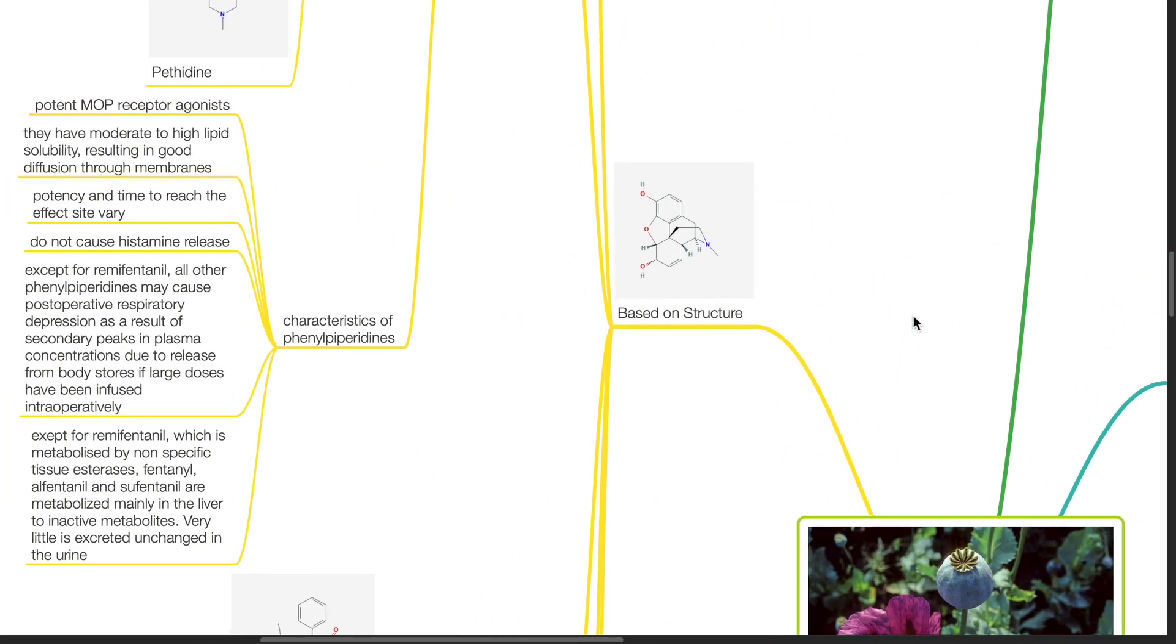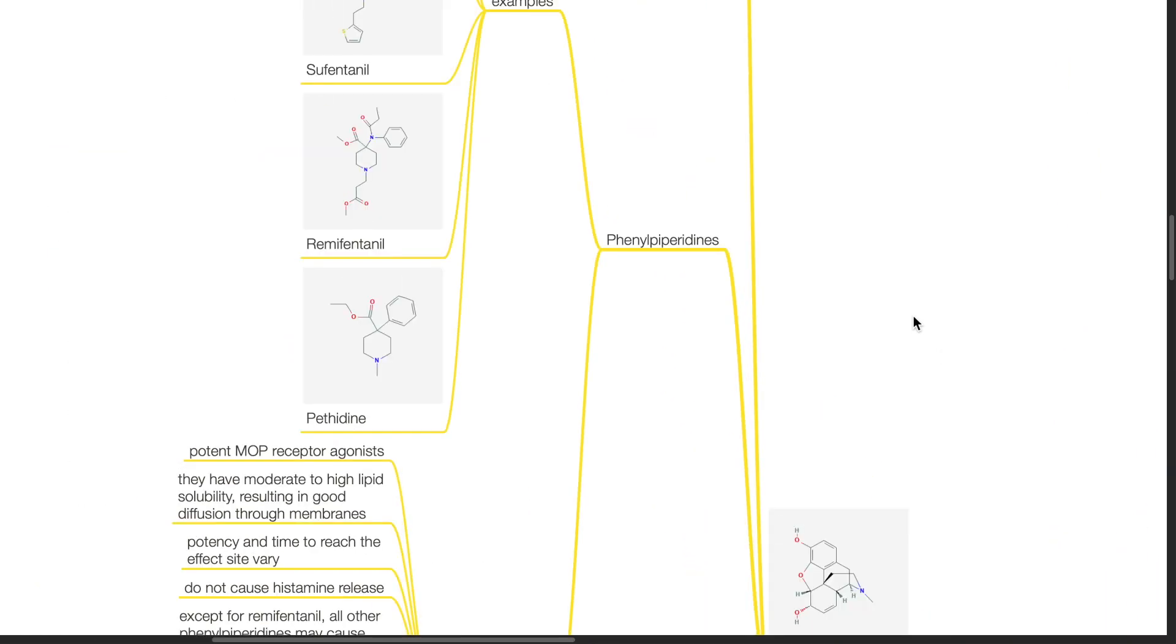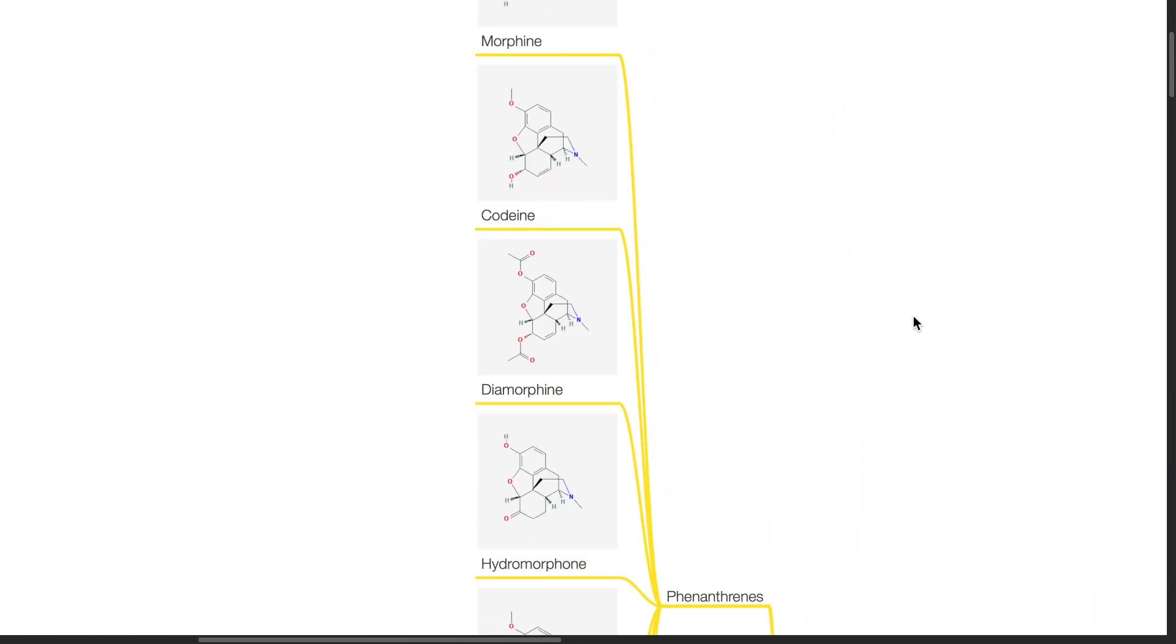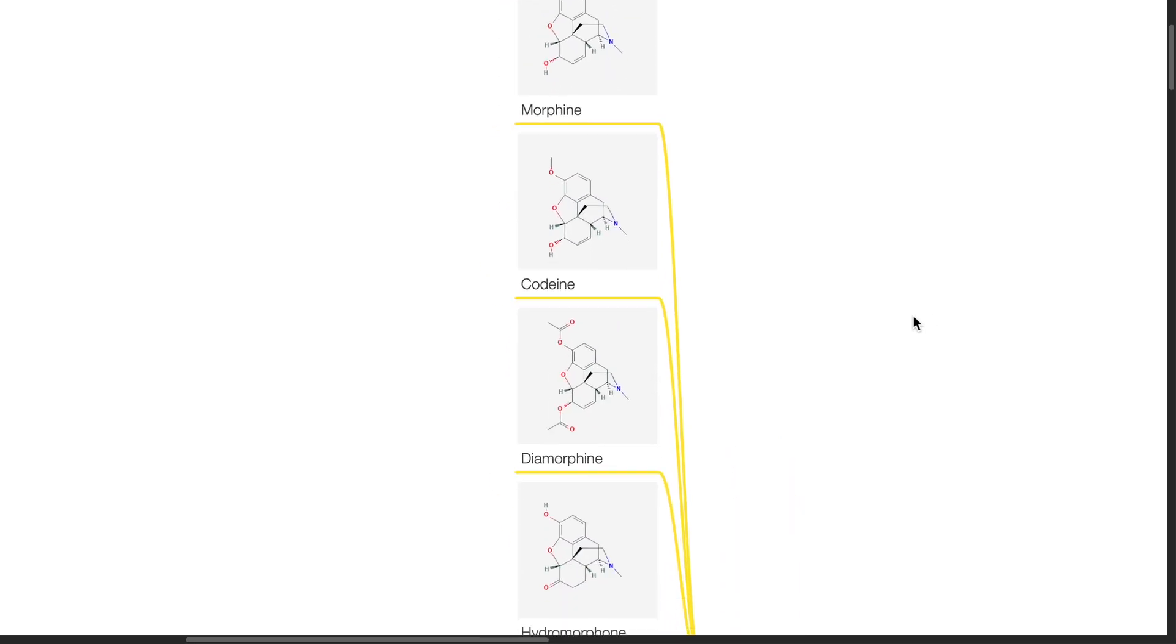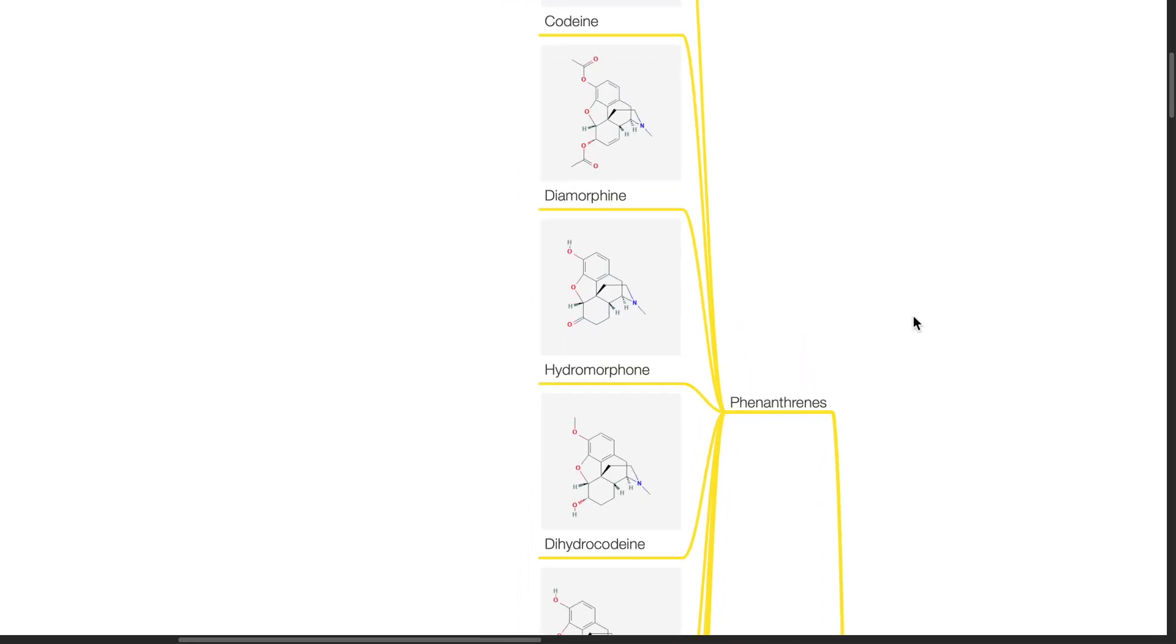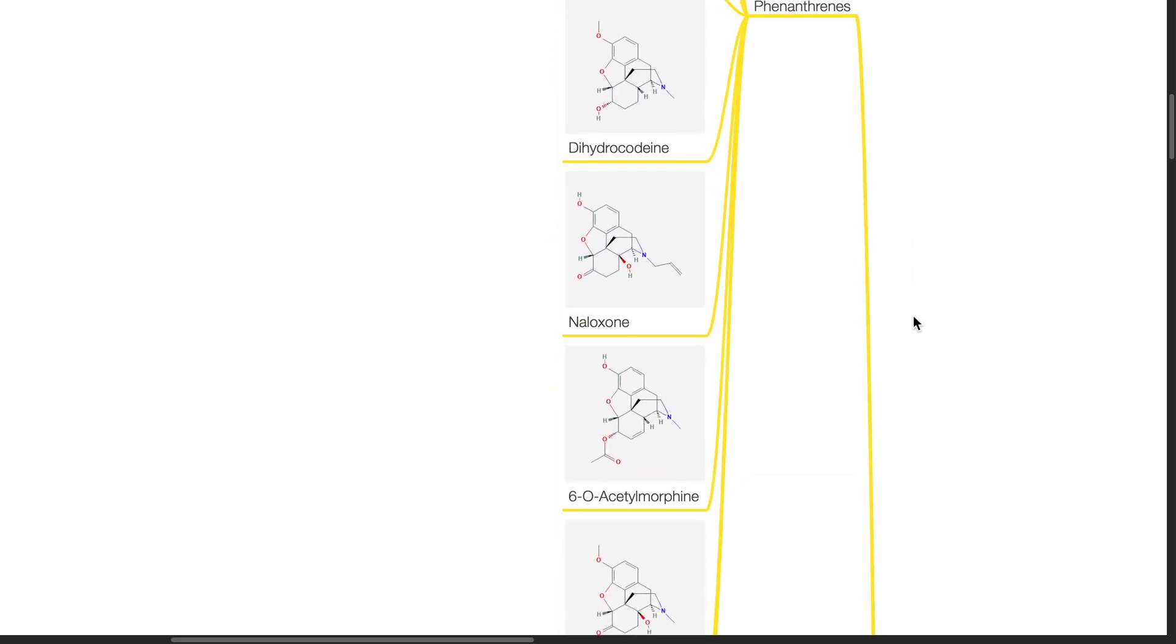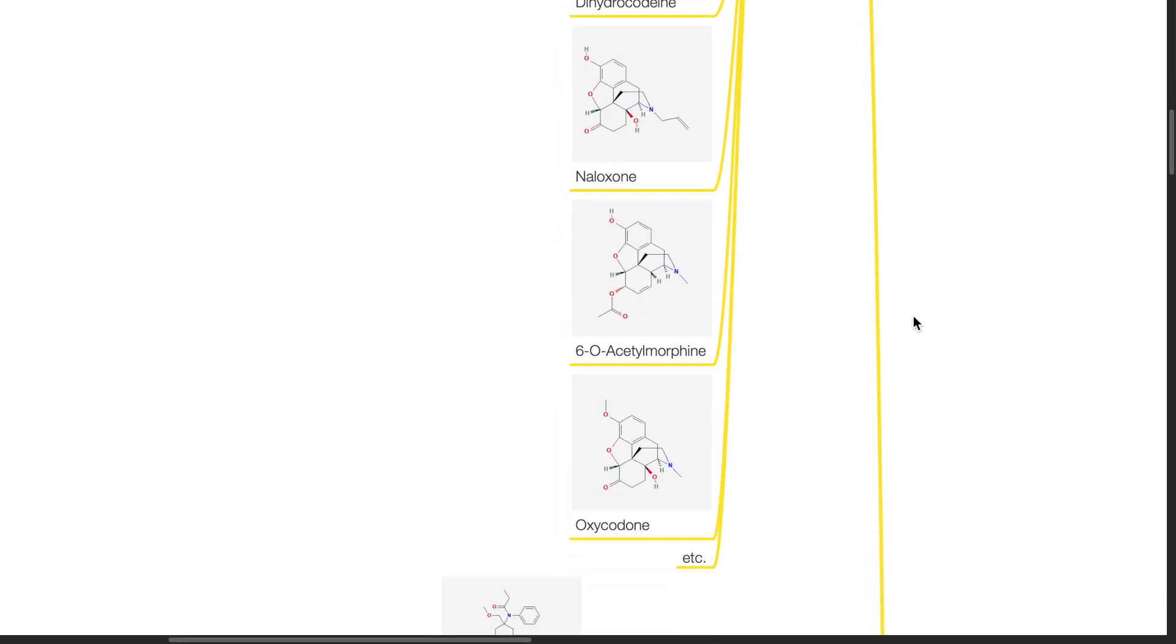Opioids can be classified based on structure. Examples of phenanthrene includes morphine, codeine, diamorphine, hydromorphone, dihydrocodeine, naloxone, 6-O-acetylmorphine and oxycodone.